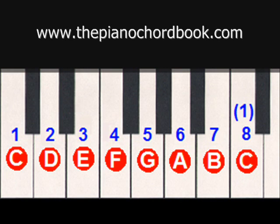Starting on the first scale degree, we're going to make a C major chord by playing C, going up to the third, E, and then up to the fifth, G. So C, E, G make a C major chord. Building a chord off the second scale degree will give us a D minor chord. We have D, go up to the fourth, F, and up to the sixth scale degree, A. D, F, A make a D minor chord.